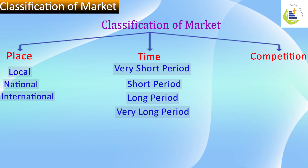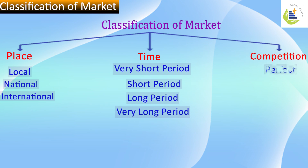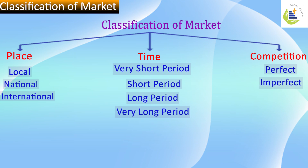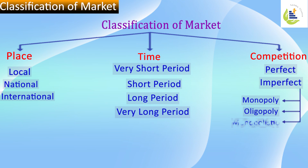We can also classify the market in terms of level of competition — perfect competition or imperfect competition. In case of imperfect competition, we can further classify it as monopoly, oligopoly, or monopolistic competition.